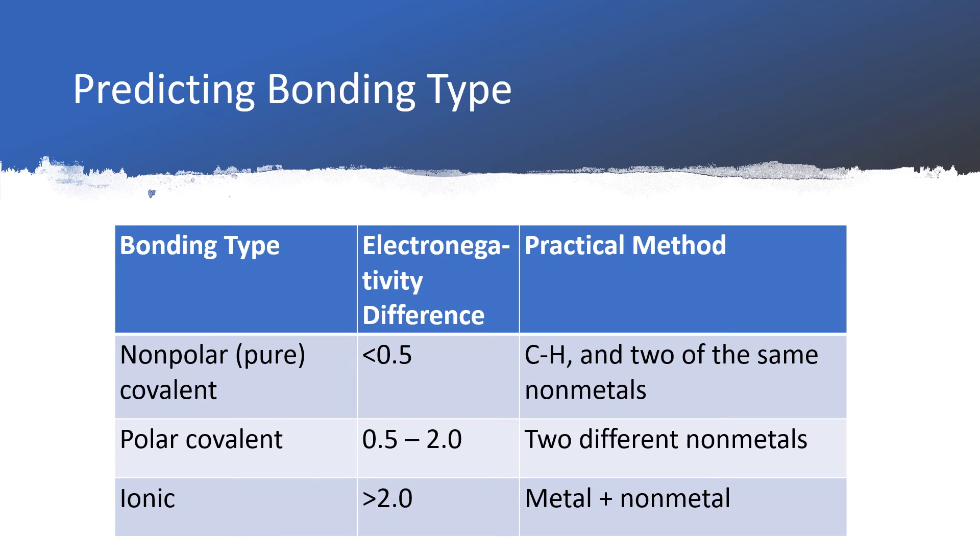If you have numbers for the electronegativity, you can subtract the electronegativity of the two atoms involved in the bond, and depending on what that difference turns out to be, determine what type of bonding is present. If you have a difference in electronegativity of less than 0.5, then we would consider the bond formed by those two elements to be a pure covalent bond. If that difference fell between 0.5 and 2.0, we would consider it polar covalent. And if it was bigger than 2.0, we would consider it ionic. That correlates very well with our practical method of saying that nonmetals form covalent bonds and a metal plus a nonmetal forms an ionic bond, but it lets us break the covalent bonding down into pure and polar.